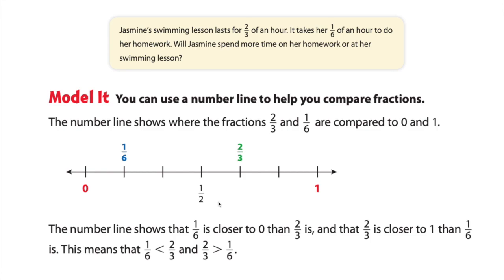Now the number line shows that one-sixth is closer to zero and that two-thirds is closer to one. So that means that two-thirds is greater than one-sixth. Two-thirds is greater than one-sixth and one-sixth is less than two-thirds.